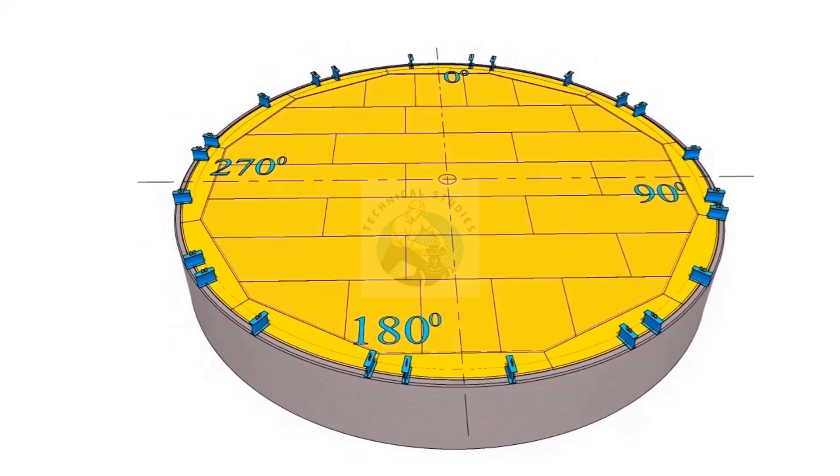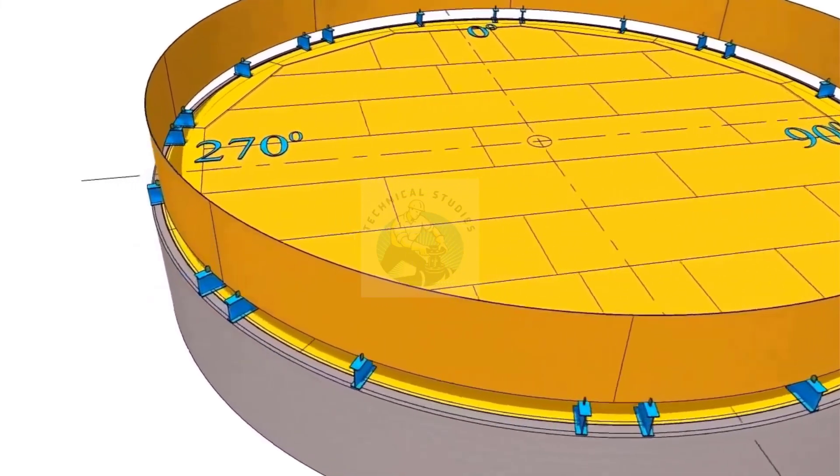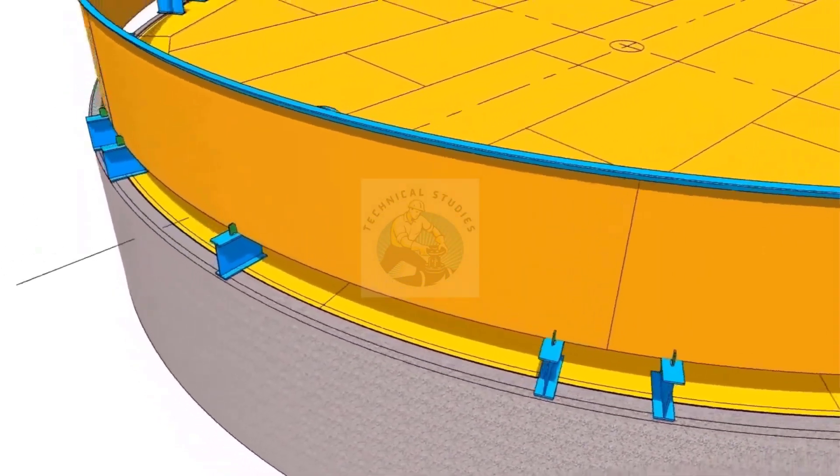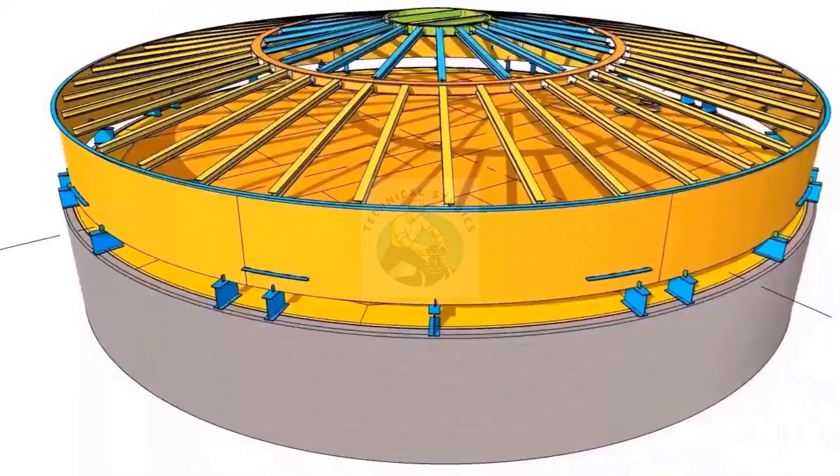Erect the top shell course on the stools. Install the curb angle. Install the roof structure.